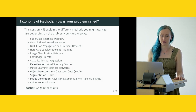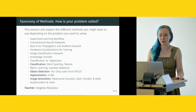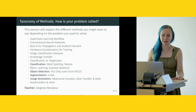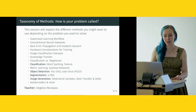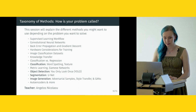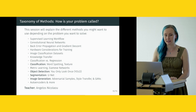We will cover concepts such as supervised learning, convolutional neural networks, back-error propagation and gradient descent, hardware considerations for training, image classification datasets, and knowledge transfer. We'll look at different methods including classification versus regression, word spotting and texture, metric learning, Siamese networks, object detection with YOLO (You Only Look Once), segmentation with UNET, and image generation — briefly touching on adversarial samples, style transfer, GANs (generative adversarial networks), and autoencoders.